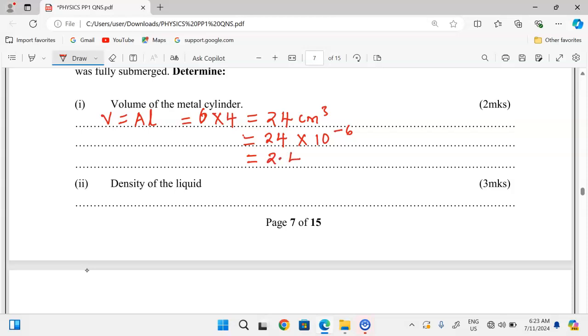This can also be converted to SI units whereby we need to say that cubic centimeters to be converted to cubic meters, we divide by a million. And so when this is divided by a million, then we're going to get 24 times 10 power negative 6 cubic meters, or 2.4 times 10 power negative 5 cubic meters in standard form. So that is the volume of the metal cylinder in SI units.